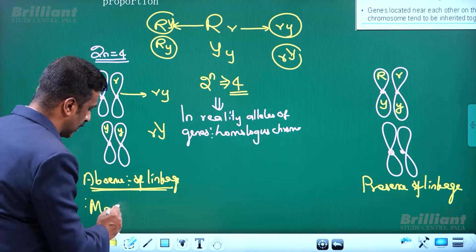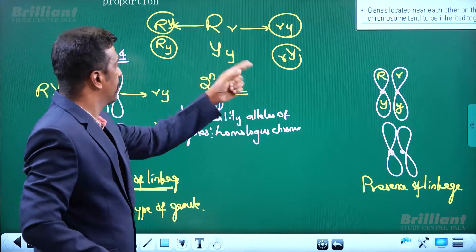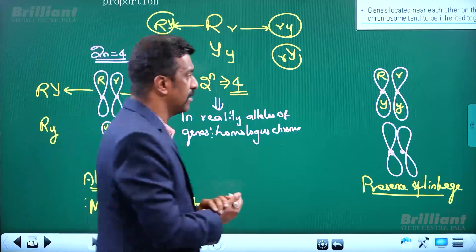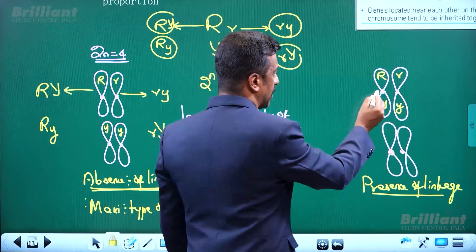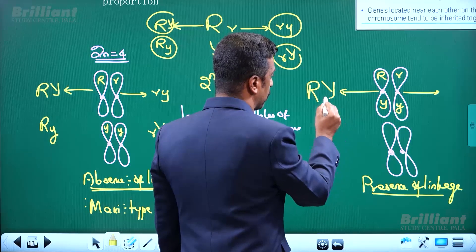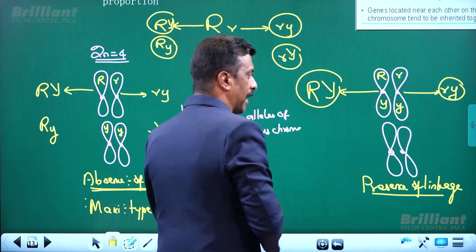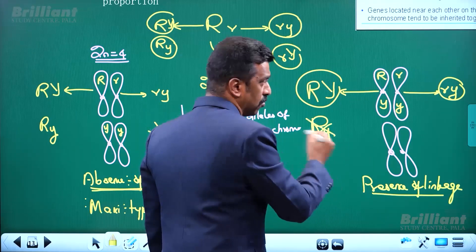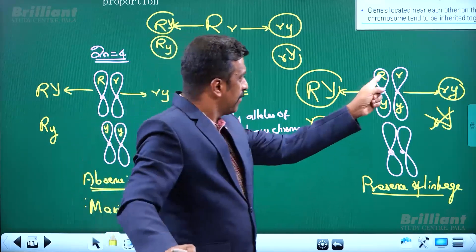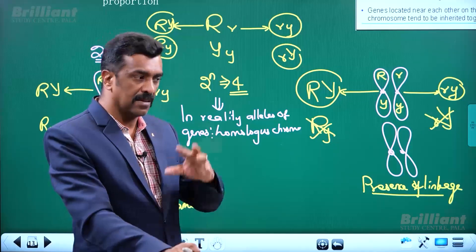There is a possibility for the maximum type of gamete. The chromosome has capital R, capital Y — combination one. Small r, small y — combination one. Capital R, small y — combination. Small r, capital Y — combination. That means independent segregation occurs. One pair of chromosome with linkage means independent segregation does not occur.